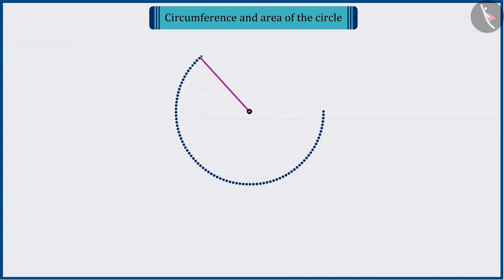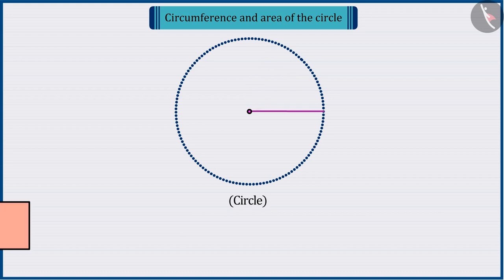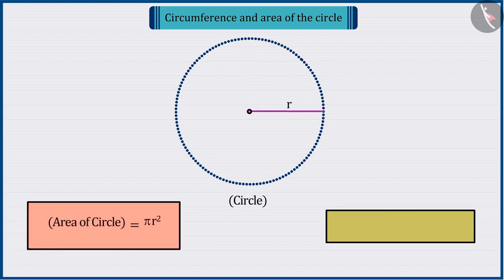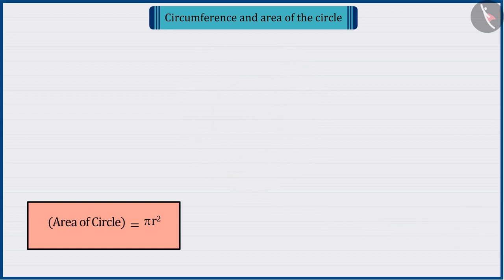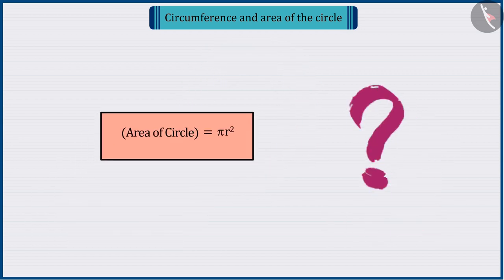As you all know, the group of all the points on a plane which are at a constant distance from a fixed point on the plane is called a circle, whose area is pi r raised to the power 2. Have you ever wondered how this formula for area would have been derived?